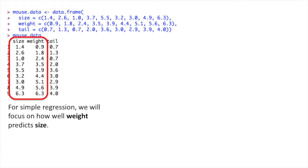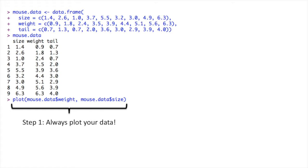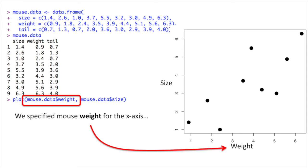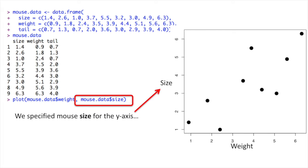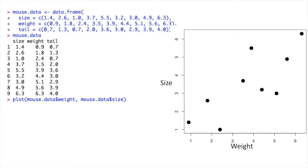For simple regression, we will focus on how well weight predicts size. Step 1: always plot your data. We specified weight for the x-axis and size for the y-axis. Plotting your data as a first step is super important because it allows us to evaluate whether doing a linear regression is a good idea. Can we see a relationship in the data between size and weight? In this case, we can, and that means doing a regression makes sense.